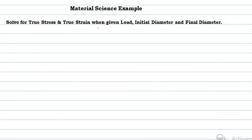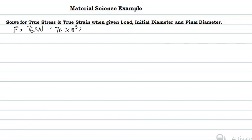For this question — how to solve for true stress and true strain given load, initial diameter, and final diameter — let's say we are given a load or force of 76 kN. It is important to note that you are supposed to work in SI units, so you convert 76 kN to 76 × 10³ Newtons.